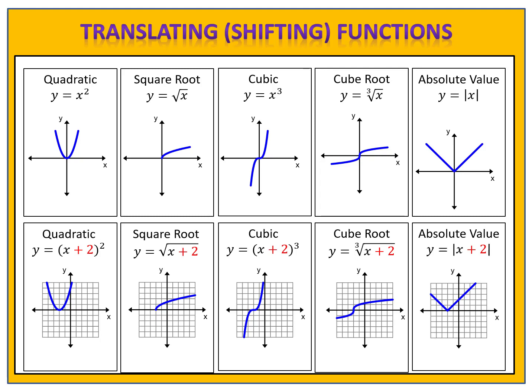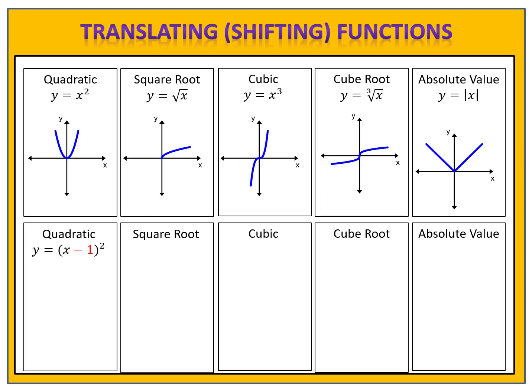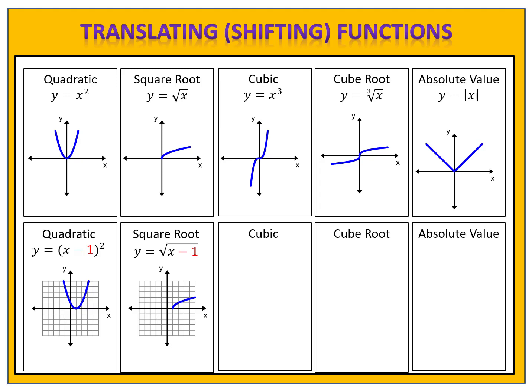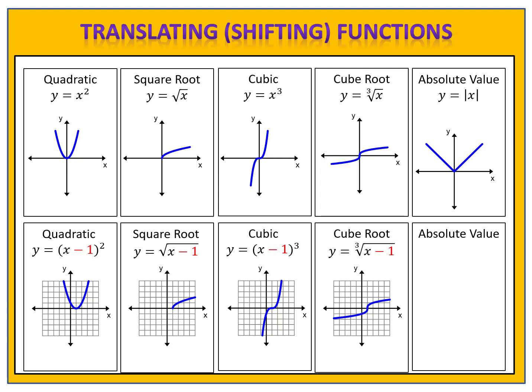The process for shifting from function to function is exactly the same. Remember, if we want to shift to the right, we will subtract in the parenthesis. Here we have the function y equals x minus 1 all squared. Minus 1 in the parenthesis means that the quadratic function is shifting 1 unit to the right. You'll see that this holds true in all of the other functions. If I take the square root function and subtract 1 on the inside, my function moves 1 unit to the right. If I do that with the cubic, again, my function moves 1 unit to the right. The same is true for the cube root — if I subtract 1, the parent function moves 1 unit to the right. And we see that the same holds true for the absolute value.